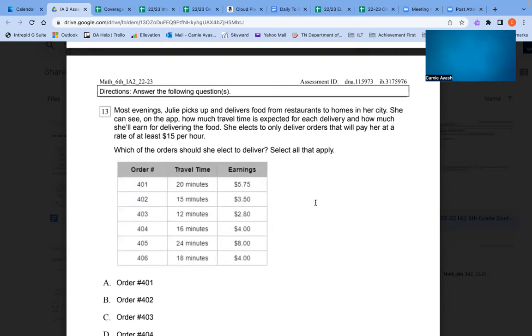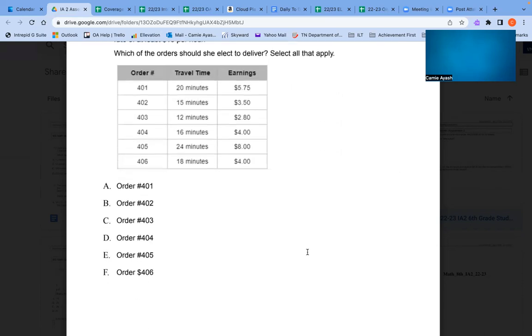Number 13: Most evenings, Julie picks up and delivers food from restaurants to homes in her city. She can see on the app how much travel time is expected for each delivery and how much she'll earn for delivering the food. She elects to only deliver orders that will pay her at a rate of at least $15 per hour. Which of the orders should she elect to deliver? Select all that apply. A. Order 401. B. Order 402. C. Order 403. D. Order 404. E. Order 405. F. Order 406.